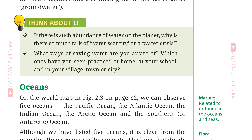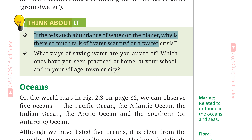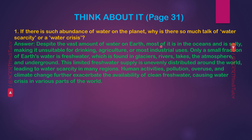Think About It, Page 31. Question 1: If there is such abundance of water on the planet, why is there so much talk of water scarcity or a water crisis? Answer: despite the vast amount of water on Earth, most of it is in the oceans and is salty, making it unsuitable for drinking, agriculture, or most industrial uses. Only a small fraction of Earth's water is fresh water, found in glaciers, rivers, lakes, the atmosphere, and underground. This limited fresh water supply is unevenly distributed around the world, leading to water scarcity in many regions.